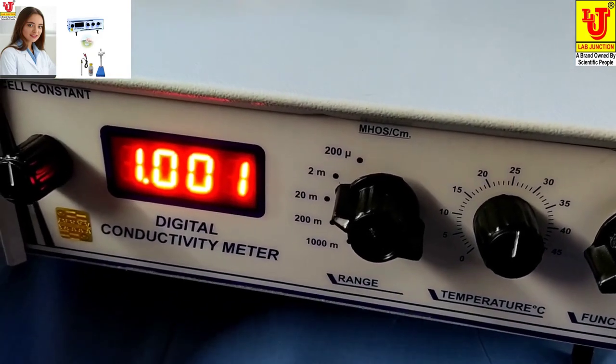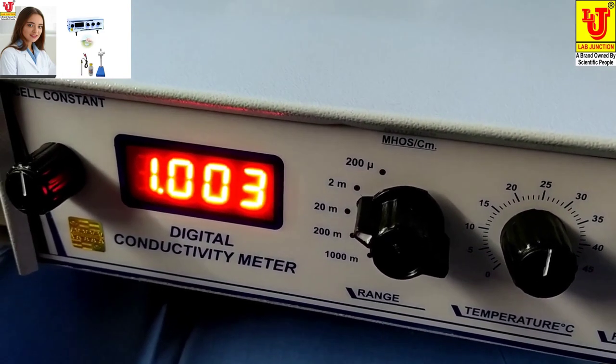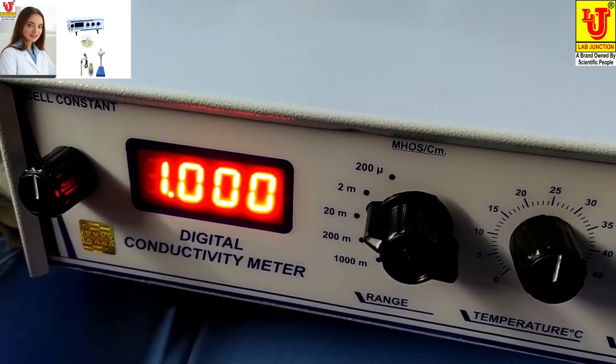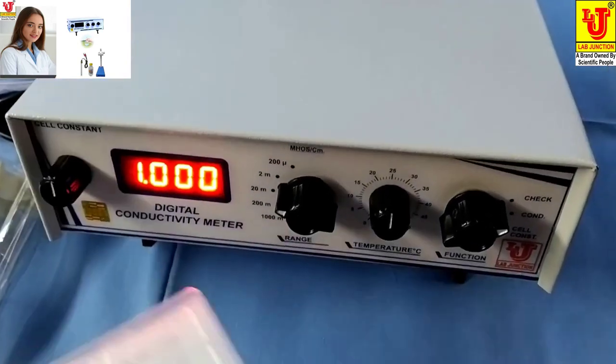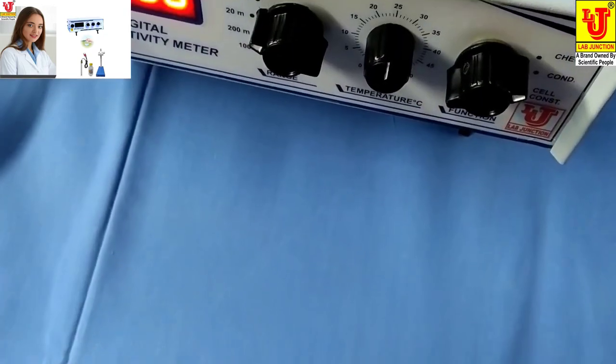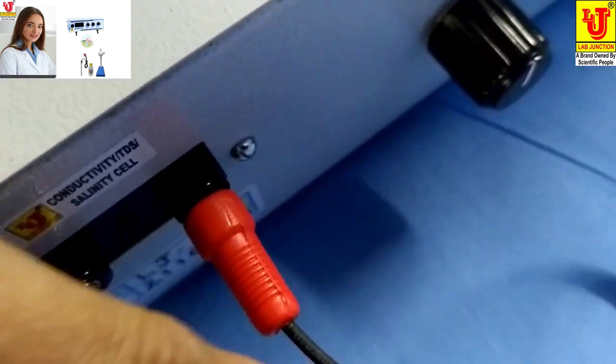Suppose this is blinking, again you can set that there. Now I am connecting Conductivity Cell to our Digital Conductivity Meter like this way.